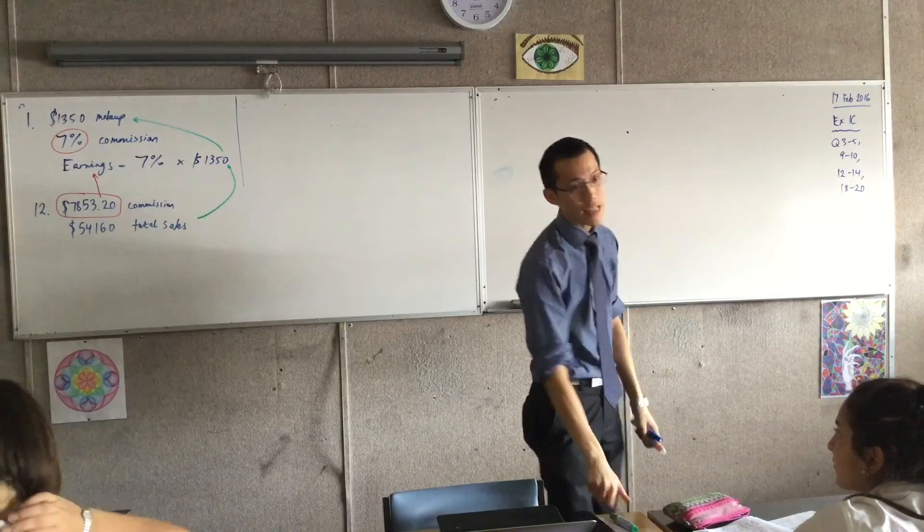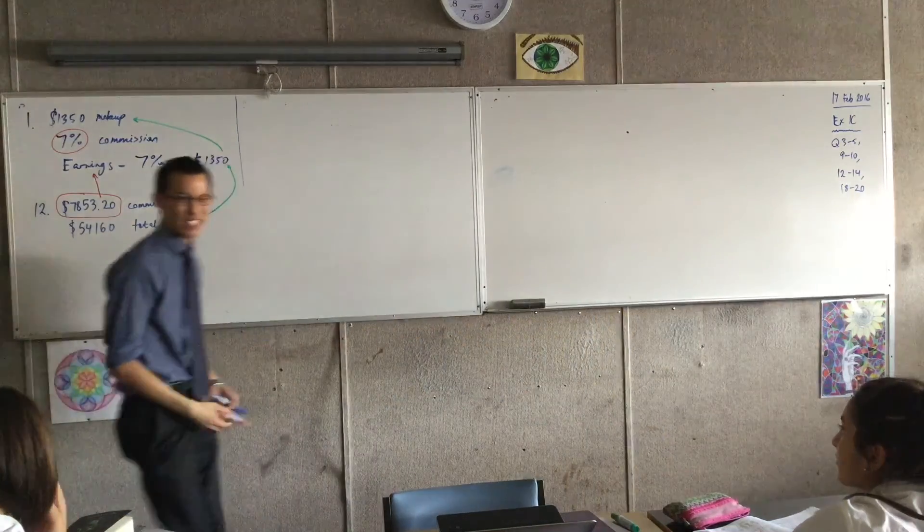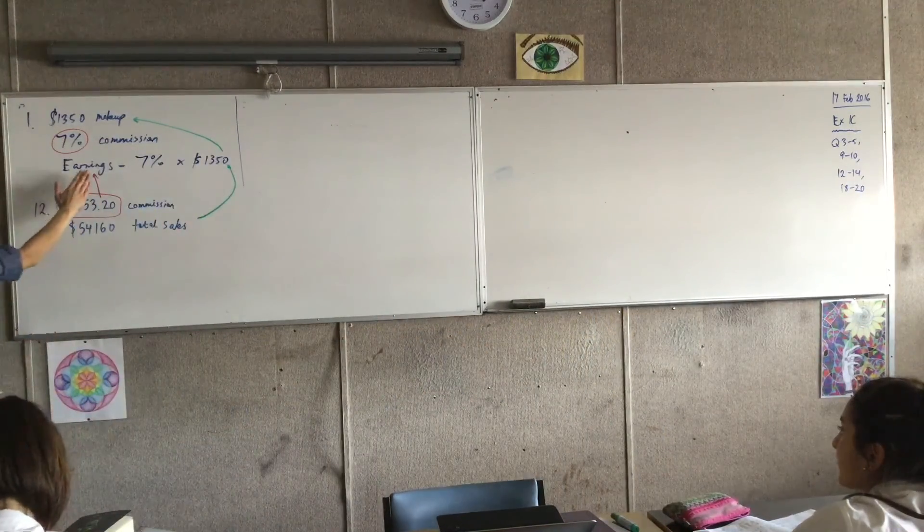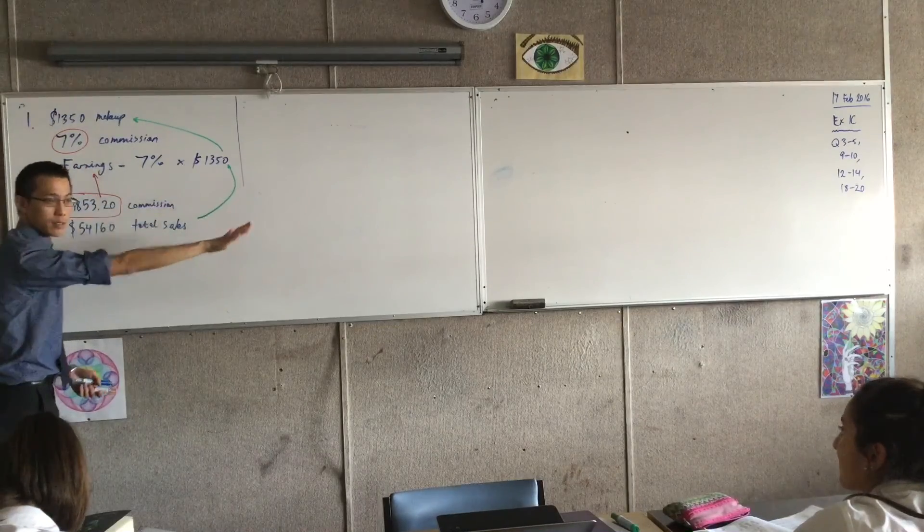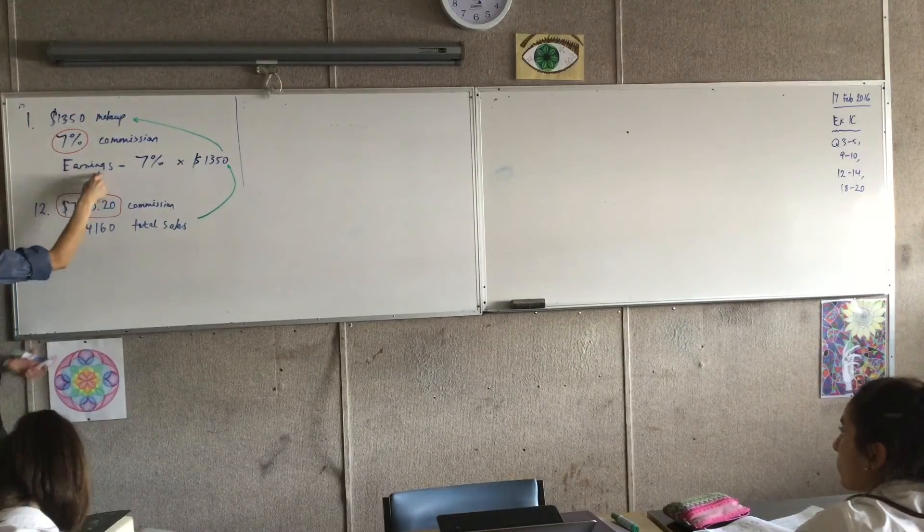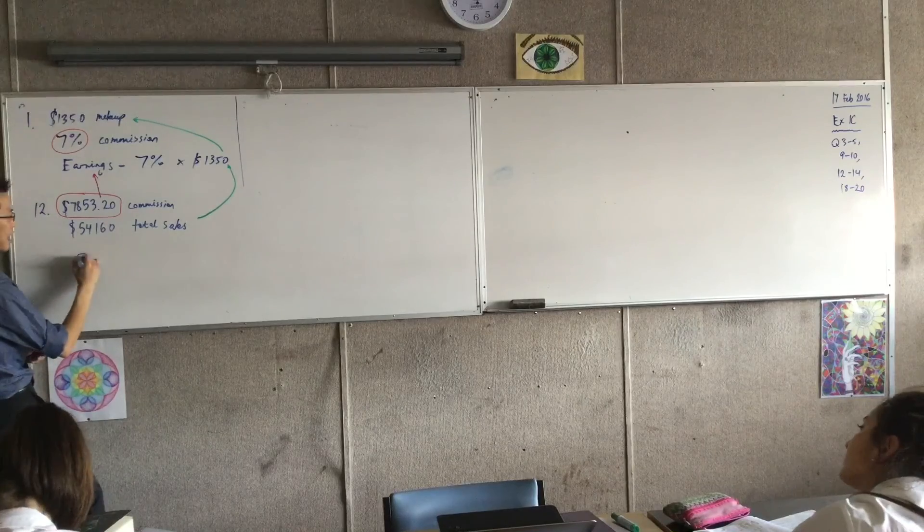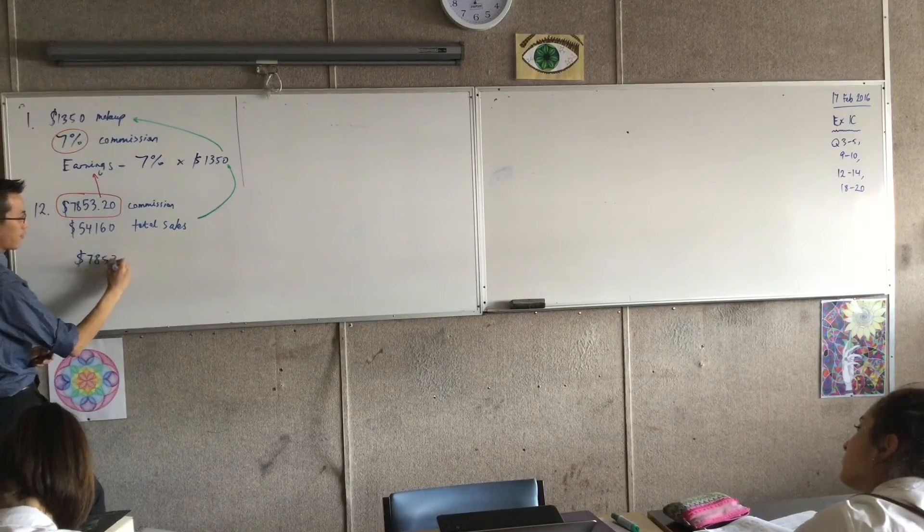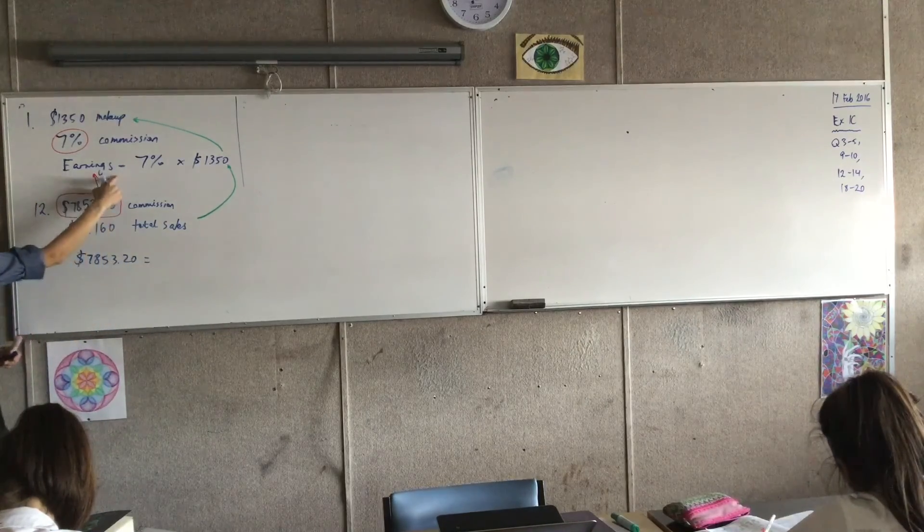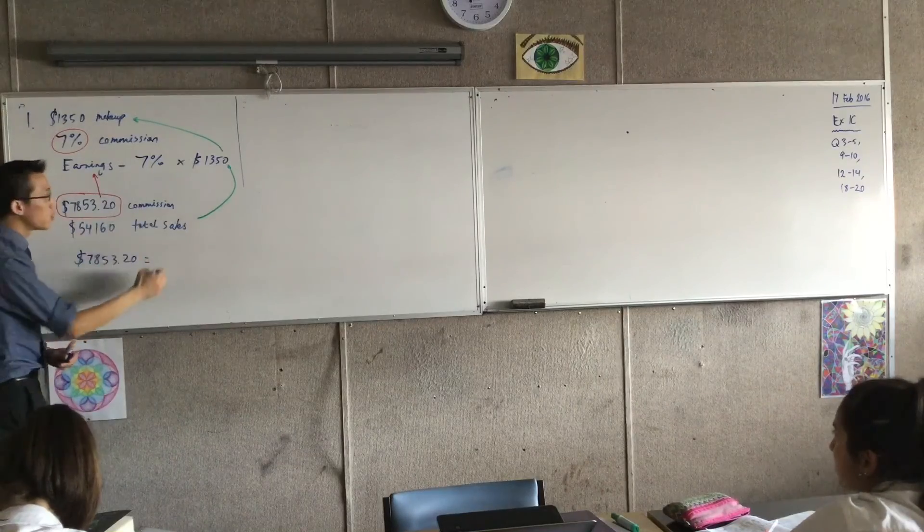Okay, what that means is when I put together my equation it's going to look a bit different, right? Instead of having this equals a couple of numbers - in fact, I already know what the earnings are, right? So I'm going to start right out the gate by saying 7853.20, that's the first thing it equals.